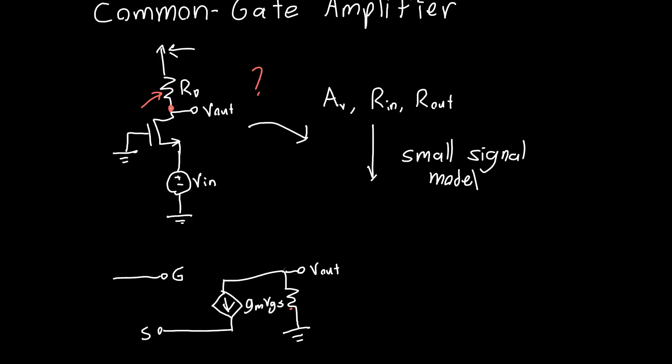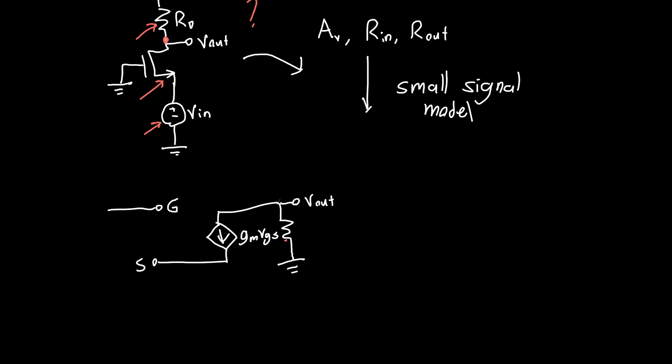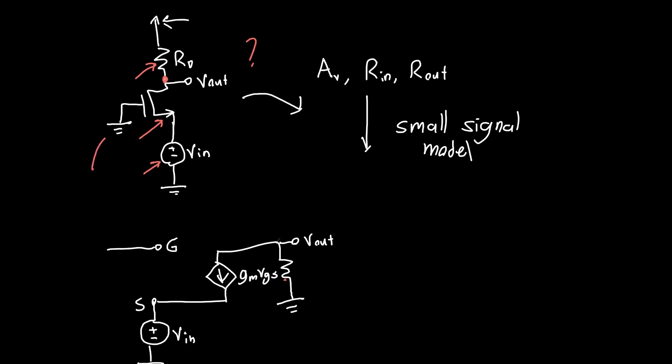This terminal over here is our source. This terminal is just connected straight to a voltage source VIN. The gate is connected straight to ground. This is the full small signal model for the circuit. We're interested in calculating, well first let's do the gain, Vout over VIN.